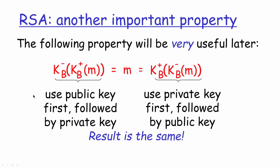On the other hand, for some other purposes we will also be reversing this property of RSA, where I basically use the public key first followed by the private key, or at the other side I might use the private key first followed by the public key. In both cases, we will always find that the original message is what gets generated. Whether I apply the public key first and then the private key, or the private key first and then the public key, in both cases I will be able to get back the original message. This is a very important property of the RSA algorithm that will be very useful for implementing other network security principles later on.